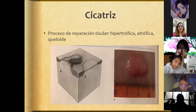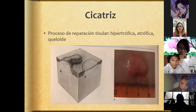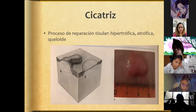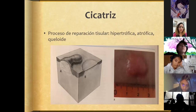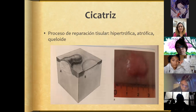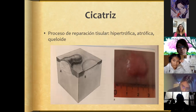A scar is the process of tissue repair. It can be hypertrophic, atrophic, or a keloid. It can originate from prior trauma like a cut or wound, or from lesions such as a nodule or acne pustule. Some people develop keloids from the spontaneous formation of primary lesions — this is how the skin heals, and it is largely determined genetically.